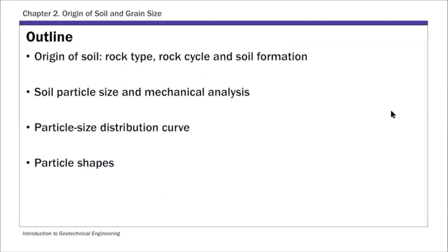In terms of what we're going to do in this chapter, we'll probably finish everything today. We'll briefly discuss the origin of soil — rock type, rock cycle, and soil formation — and then the focus of this chapter is on particle size, mechanical analysis, and particle size distribution curve. These two items are really the core of this chapter. Your first two labs are basically mechanical analysis tests — one is sieve analysis and one is hydrometer analysis — and then we'll talk about the particle size distribution curve as well.